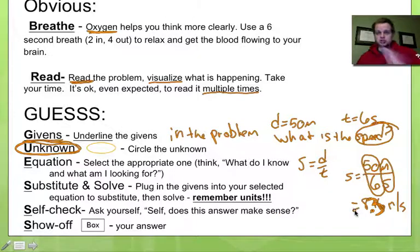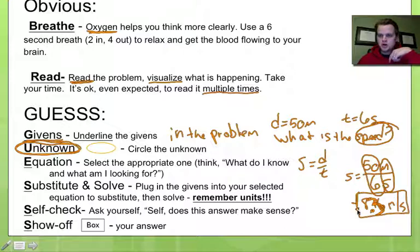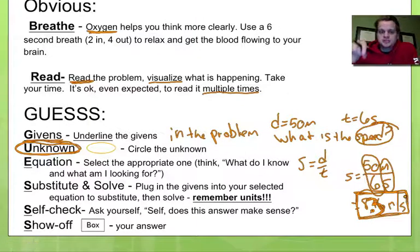All right, so now you're sure of the answer. You breathed, you read, you underlined the givens, you circled the unknowns, you picked the right equation, you substituted, you solved, you self-checked, and you know you have the answer. There's one last step that I need you to do, and that's boxing the answer, otherwise known as show off. You need to show off your answer. Box it so that I know which one is your answer. If I don't know which one is your answer, I might mark the wrong one. So you need to tell me which one is your answer.